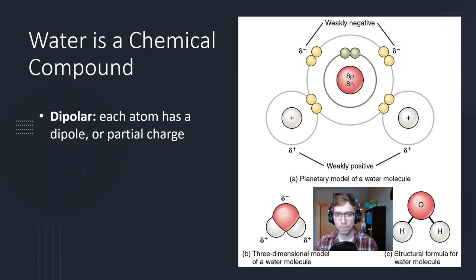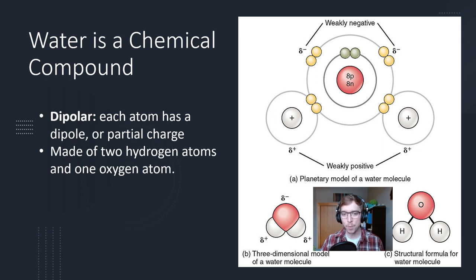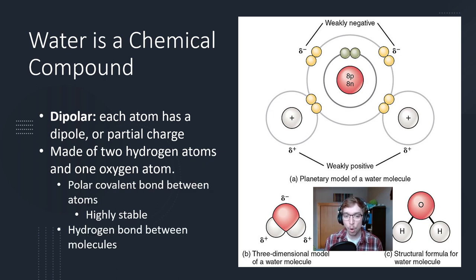We can see here a weak positive polarity in our little molecule diagram. That's a three-dimensional model of what a water molecule looks like, a structural formula of a water molecule. It's made up of two hydrogen atoms and one oxygen atom. There's a polar covalent bond between atoms. These are very stable, difficult to break, the polar covalent bond between water and hydrogen.